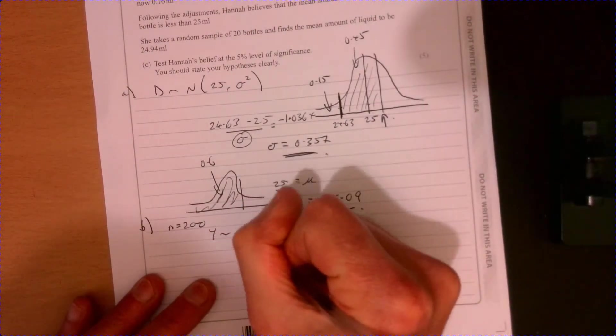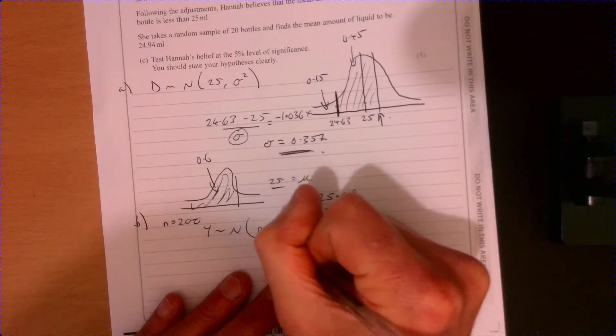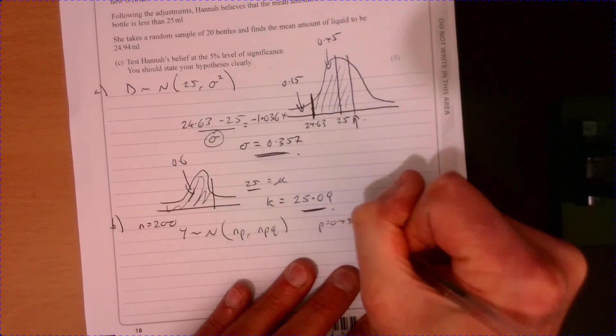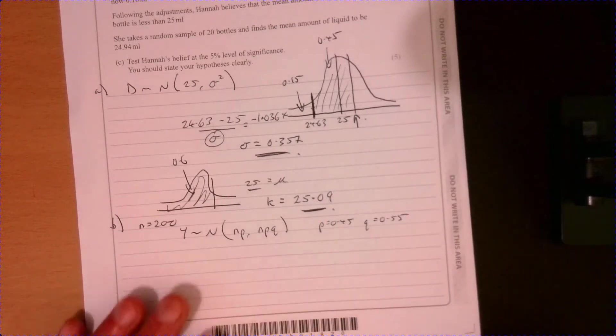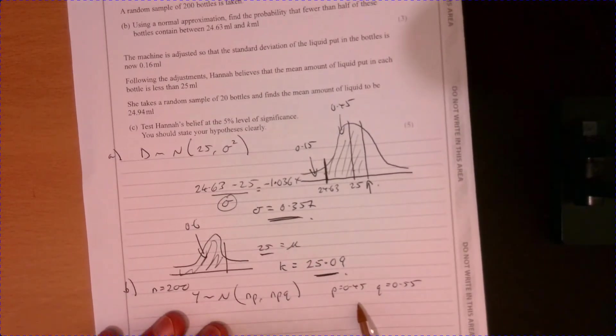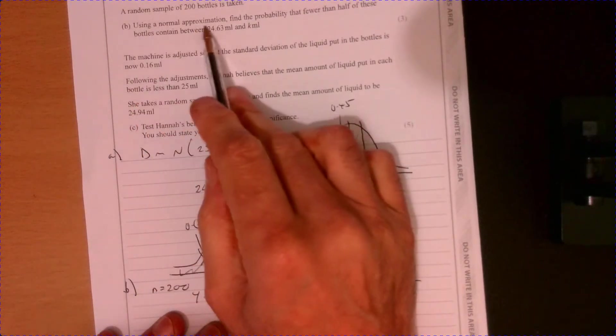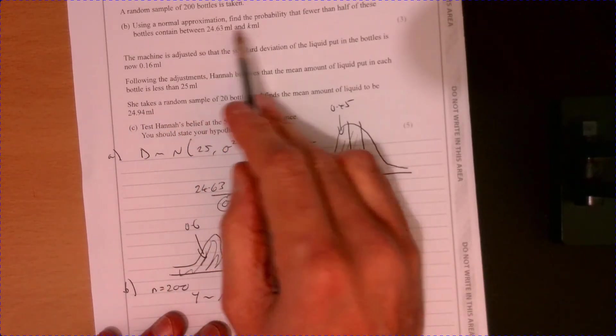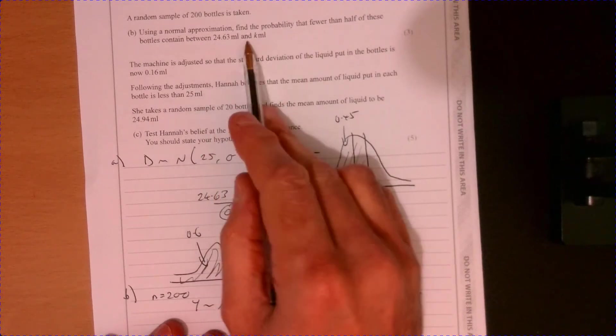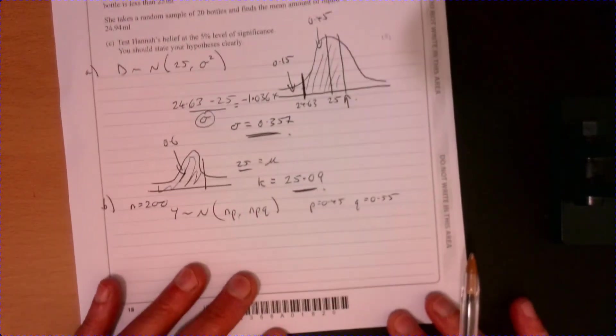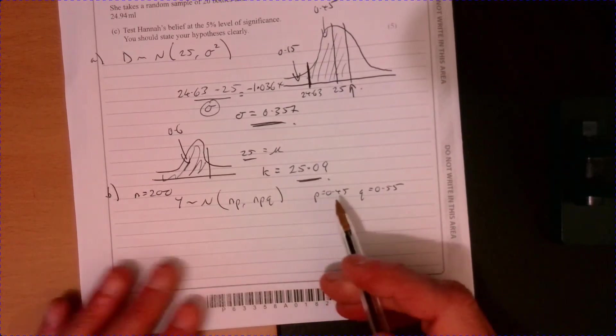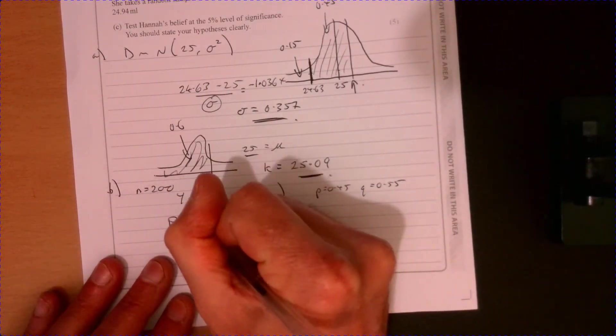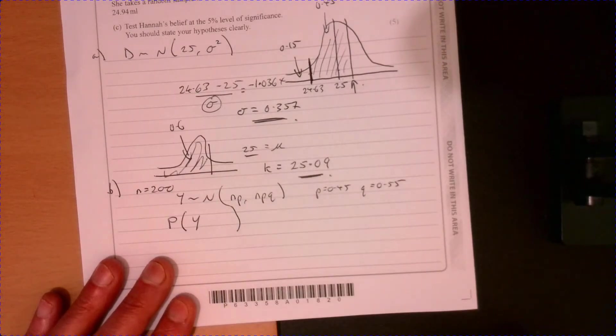So a normal approximation, let's just use a different letter. So that's where we've got NP and NPQ. And that's where P is equal to 0.45, Q is equal to 0.55. If you read what it's asking you here, it's saying using a normal approximation, find the probability that fewer than half of these bottles contain between our calculated value there. So all we're going to do here is it says fewer than half of them. So we just need to make sense of what that means. So that's like less than 100.